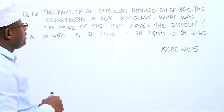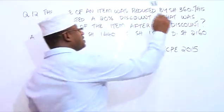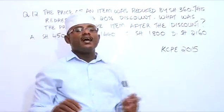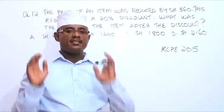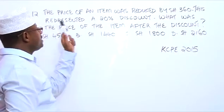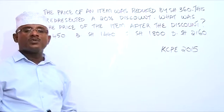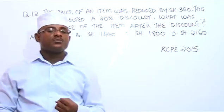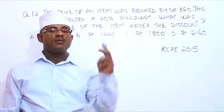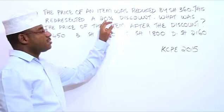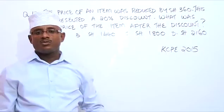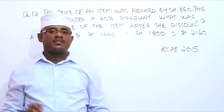In this question, the price of the item was reduced by 360 — meaning 360 is the actual discount in terms of savings. The question also tells us the discount in terms of percentage: it was 20%. So the discount is 20%, which equals 360. Therefore, 360 is 20%.